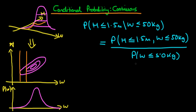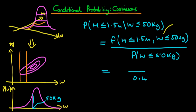We can then work out the denominator by computing the probability that weight is less than 50 kilograms, which is equivalent to the area to the left of this line, where this point on the axis corresponds to 50 kilograms. Looking at our diagram, that denominator might be something like 0.4.